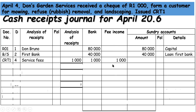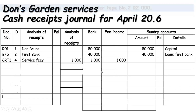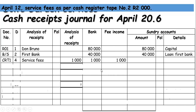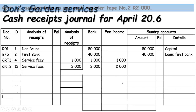The next transaction is on page 55, the 12th of April: service fees again — money coming in from the core business. Receipt number two, date is the 12th. Service fee income amounting to 2,000 rand. You see the bold underline again to show the amount has been deposited into the bank, and this is also part of the core business — fee income.